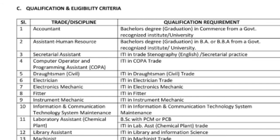Next, in Commerce, the qualification for Government Assistant in Human Resources (HRA) requires a graduate degree such as BA or BBA from a university. For the IT department, Stenography in English, Computer Operator and Programming Assistant (COPA) — which is the ITI department with COPA training — is required.